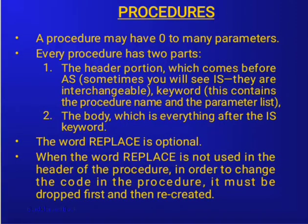A procedure may have zero to many parameters. Every procedure has two parts: the header portion, which comes before AS — sometimes you will see IS, they are interchangeable. This contains the procedure name and the parameter list. The second part is the body, which is everything after the IS keyword.